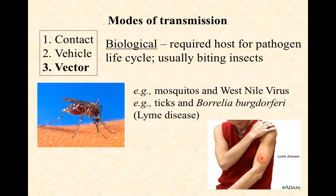Finally, vector transmission refers to something alive — typically a biting organism — that is required to move the pathogen around. A biological vector is required for the pathogen's life cycle. These are usually biting insects like mosquitoes and ticks, and the pathogen actually undergoes part of its life cycle within the vector before being introduced into the next host.